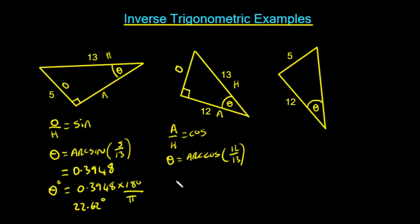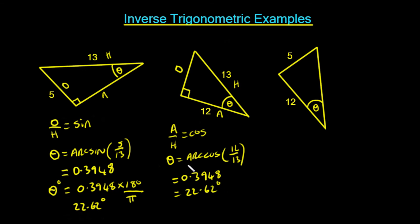Working that out gives us 0.3948 radians and 22.62 degrees — which makes sense because we're dealing with exactly the same angle as in the previous example.